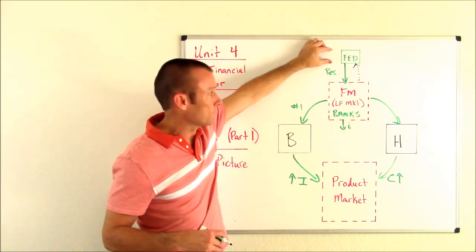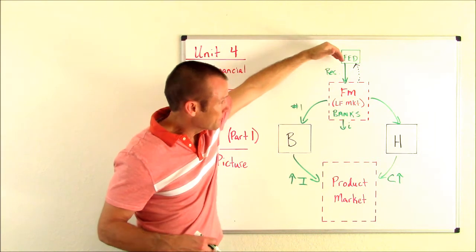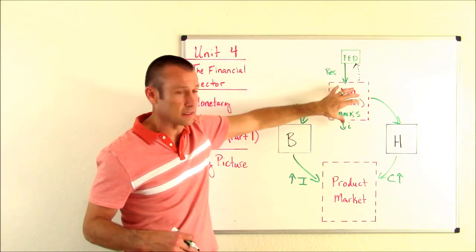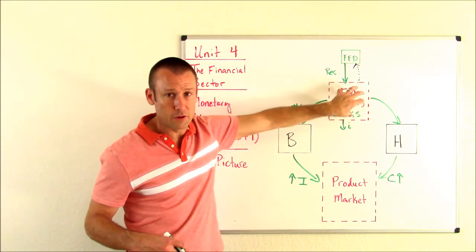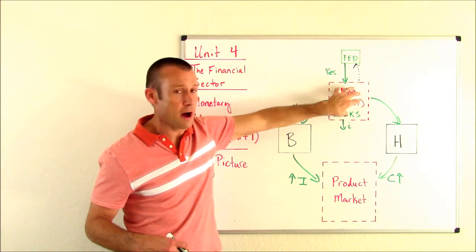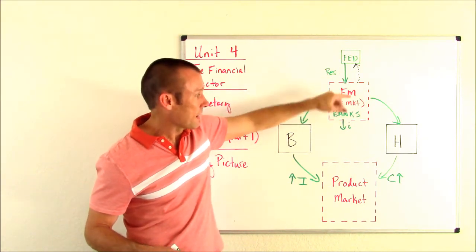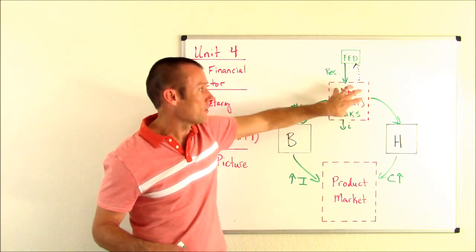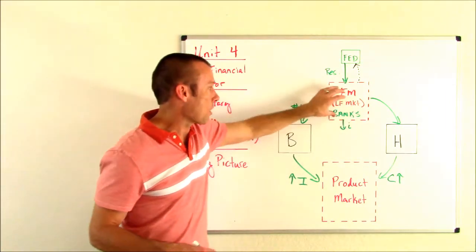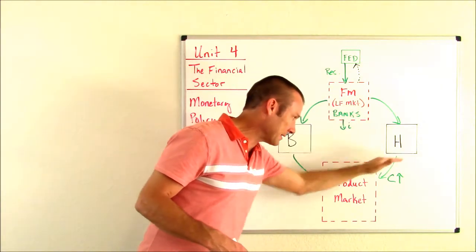They push those Federal Reserve notes into banks. Those Federal Reserve notes while they're in banks are not in circulation. They're not money yet. However, they are loanable funds. What's going to happen to the interest rate? It's going to go down. Hoping businesses and households borrow that money and then spend it, because that's what they're trying to do.